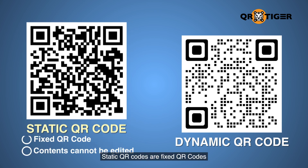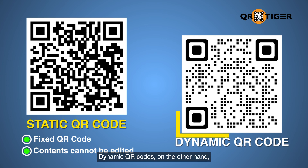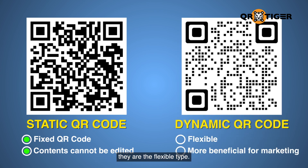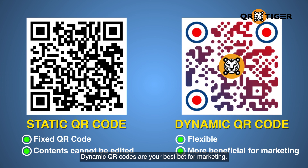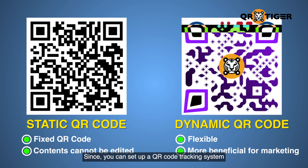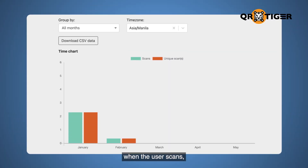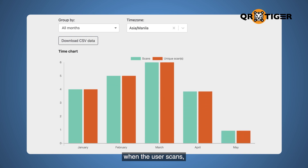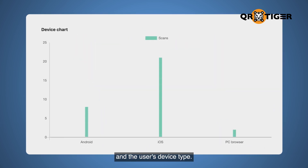Static QR codes are fixed and their contents cannot be edited. Dynamic QR codes, on the other hand, are the flexible type. Dynamic QR codes are more beneficial for marketing since you can set up a QR code tracking system to track the number of scans, when the user scans, the location where they scan, and the user's device type.